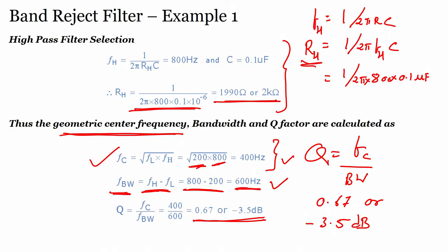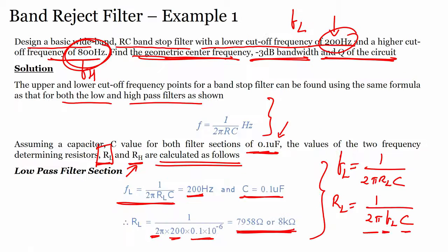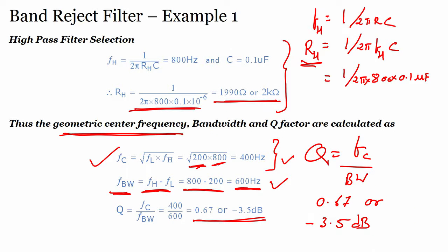Bandwidth = FH − FL = 800 − 200 = 600 Hz. Quality factor Q = FC / Bandwidth = 400 / 600 ≈ 0.67, which corresponds to approximately minus 3.5 dB. So to design a band reject filter you need the formula for F, and formulas for FC = √(FL × FH) and Q = FC / Bandwidth.